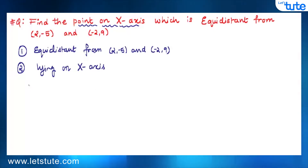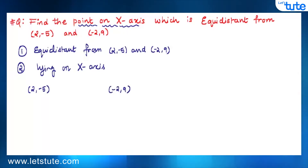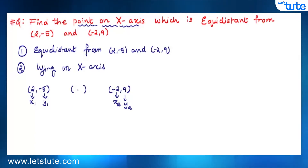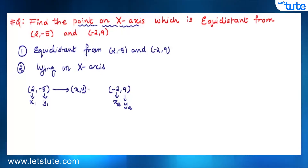First of all, let's understand the setup of the question. Suppose the point (2, -5) is the first point, so x1 = 2 and y1 = -5. The second point is (-2, 9), so x2 = -2 and y2 = 9. We need to find the third point whose coordinates we don't know, so let's say the coordinates are (x, y). The two given points are at equal distance from this third point.